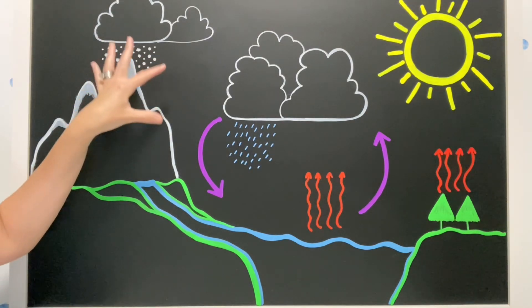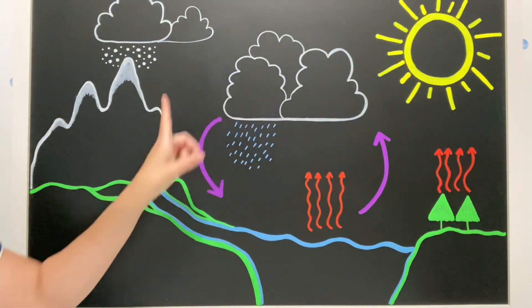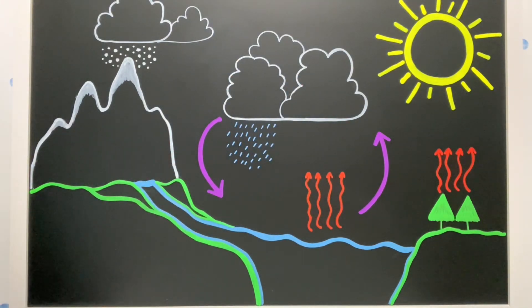And that falls back down to the ground. And it starts the process over again. And that's the water cycle.